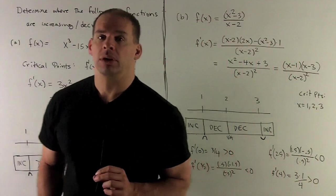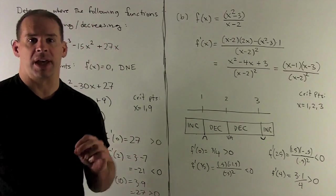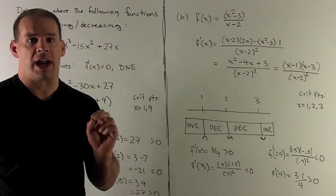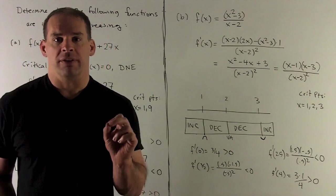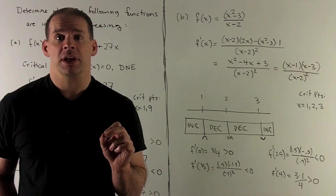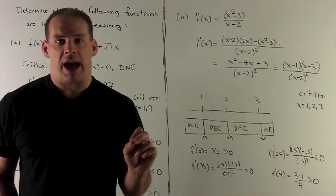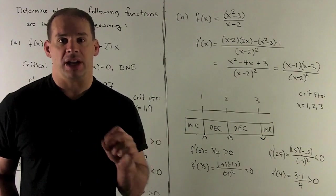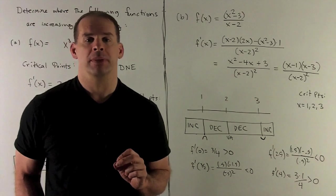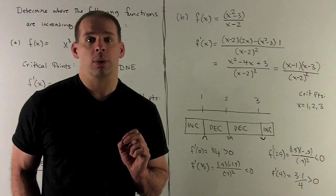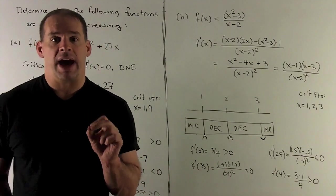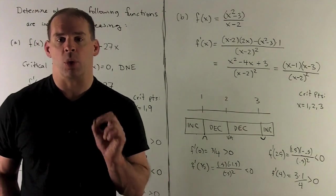Next example. Let's try f of x equal to x squared minus 3 over x minus 2. It's the same procedure. We're going to take our derivative. We'll find the critical points. It's going to separate the real line up into a bunch of regions. And I just check one point in each region. So I take my derivative. That's going to be using the quotient rule. So remember, low d high, less high d low over low squared.